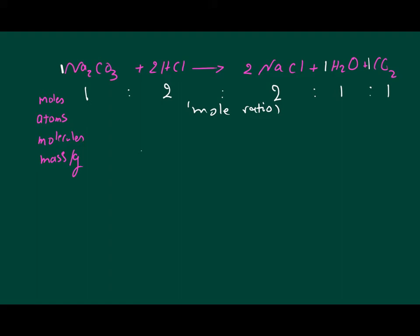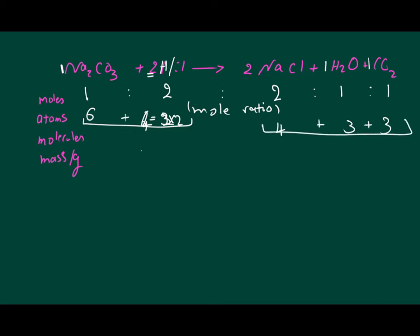In terms of atoms, you can count the number of atoms. For Na₂CO₃: 2+1+3 = 6 atoms. For 2HCl: HCl has just two atoms, so 2×2 = 4. On the product side: 2NaCl gives 4 atoms, H₂O gives 3 atoms, CO₂ gives 3 atoms. If you count the number of atoms in reactants and in products, they should be equal — there are 10 atoms on the product side and 10 atoms on the reactant side.